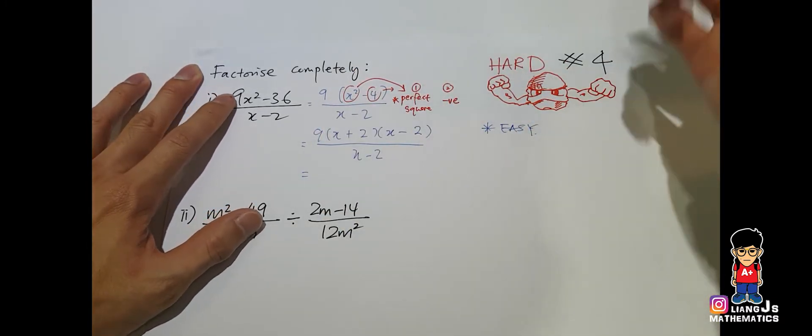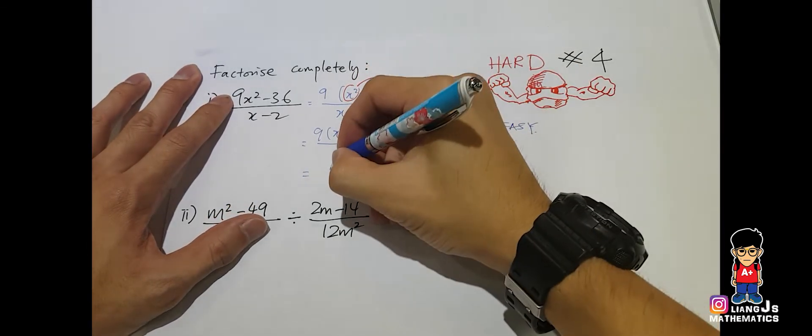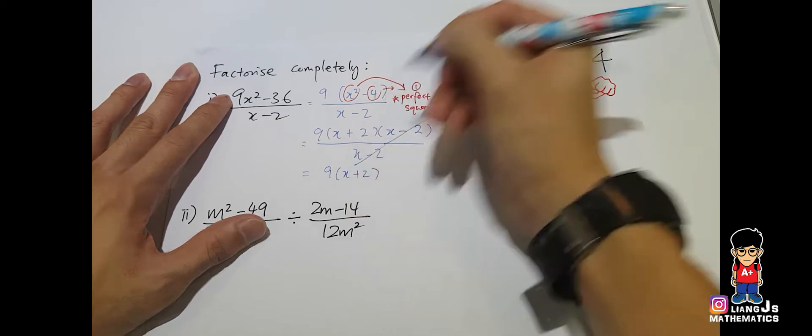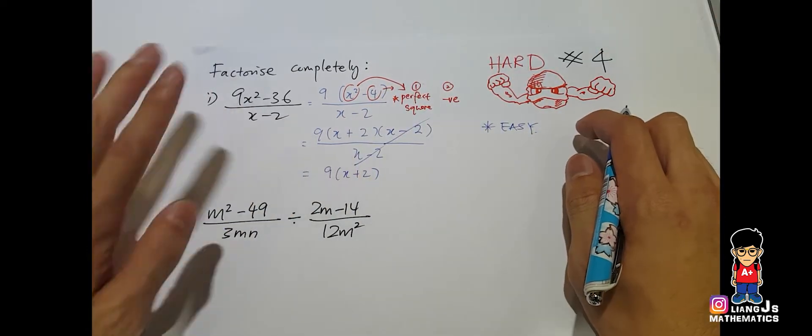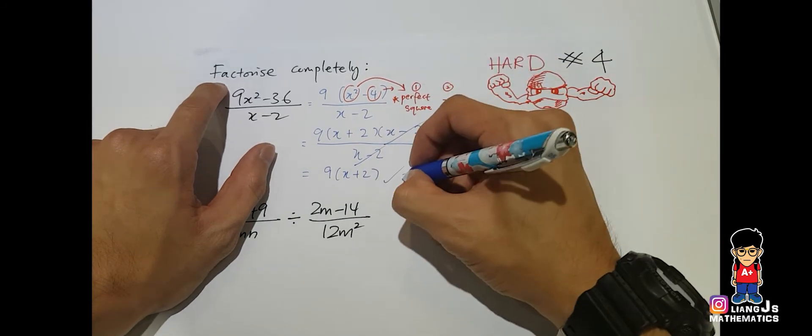And now the joy of cutting comes in. Cut, cut, because everything becomes times divide, and your final answer will be this. And if you take this one, times it back inside, don't do that because they mentioned the word, factorize. Okay, so yes, you get two marks over here.